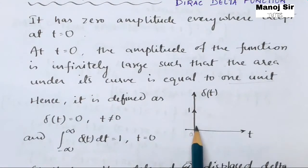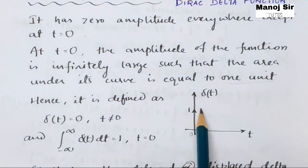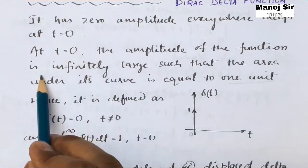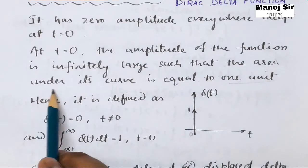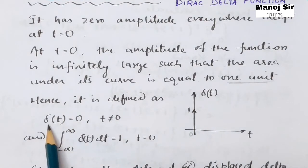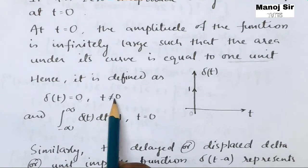In the graph you can see: the x-axis is t and the y-axis is delta(t), the unit impulse function or Dirac delta function. Apart from t equal to zero, the amplitude of this function is zero. But at t equal to zero the amplitude is infinitely large, such that the area under its curve equals one unit. Hence it is defined as: delta(t) equals zero when t is not equal to zero.